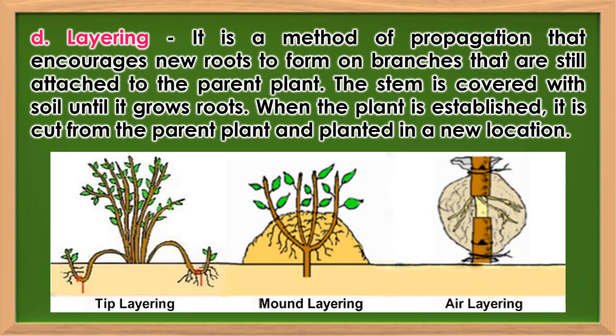Layering: It is a method of propagation that encourages new roots to form on branches that are still attached to the parent plant. The stem is covered with soil until it grows roots. When the plant is established, it is cut from the parent plant and planted in a new location.